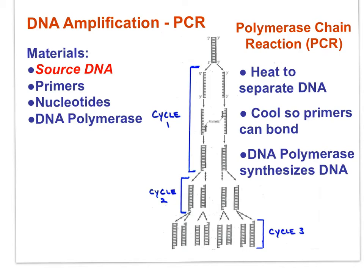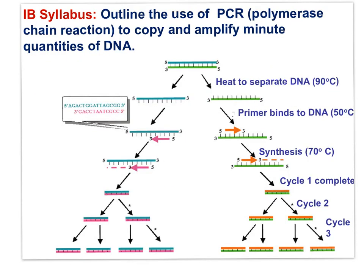We heat the DNA to separate the strands. We cool it so that the primers can bond to the DNA of interest. Taq polymerase synthesizes the DNA — end of round one — and then we run the cycle again and again, and the gene of interest is amplified exponentially. The PCR process uses source DNA, Taq polymerase, nucleotides, and primers built to target the gene of interest. First we heat the DNA to denature it, let it cool so the primers can bind, then Taq polymerase polymerizes DNA using the nucleotides. The synthesis starts from the primer, thus we amplify only the DNA of interest.